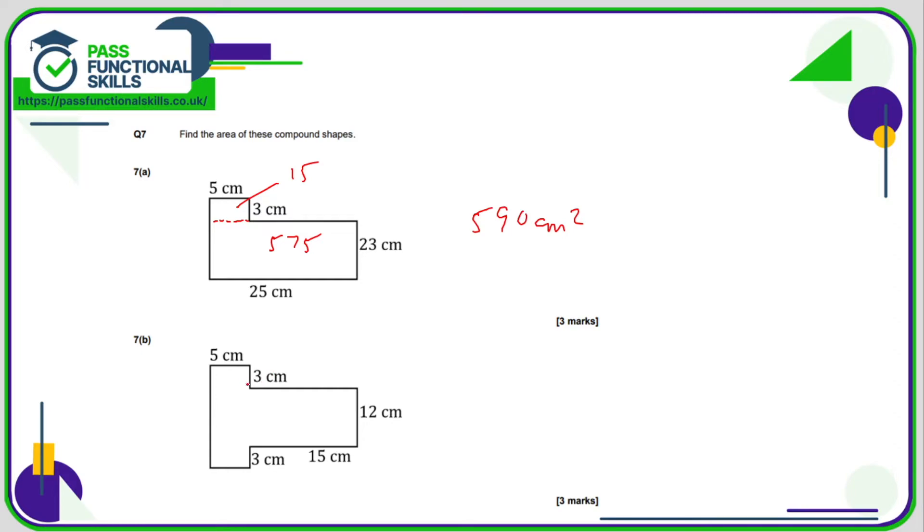With 7b, probably what I would do here is split it into two rectangles here. So we've got a 12 by 15, which is 180. And here we've got a 5 by, well, we know this is 12, this is 3, this is 3. So from top to bottom, it's 3 plus 3 plus 12. 12, 13, 14, 15, 16, 17, 18. So this has an area of 5 times 18, which is 90. And 90 plus 180 is 270 square centimetres.